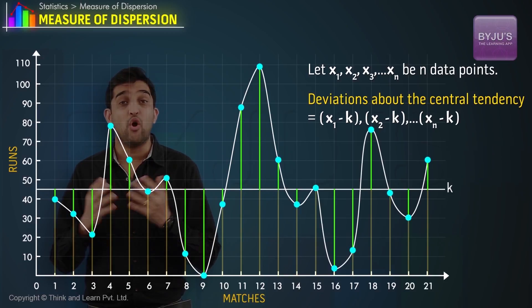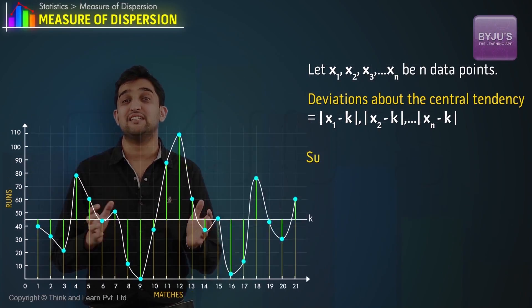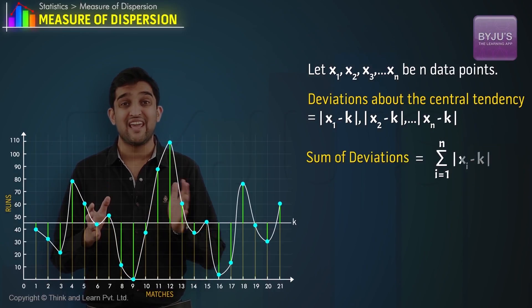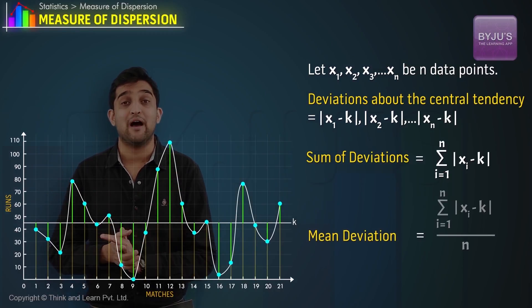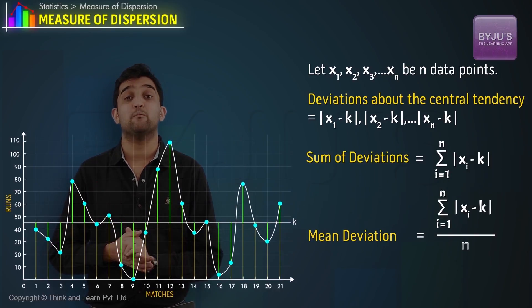This is why we take modulus of deviations about the central tendency. So the sum of deviations will be summation |xi-k|. Therefore, the mean deviation will be given by summation |xi-k| divided by n.